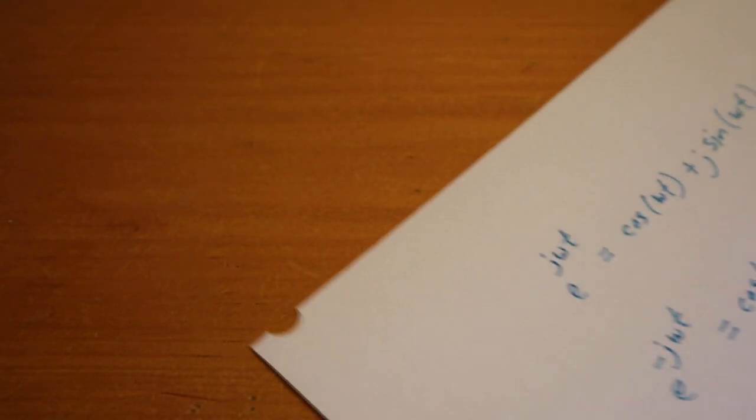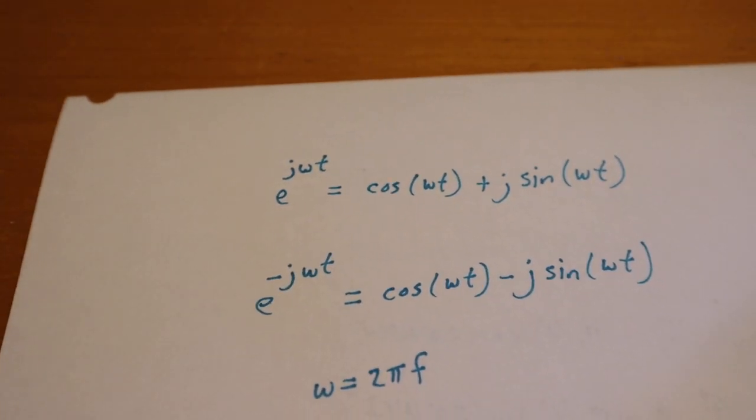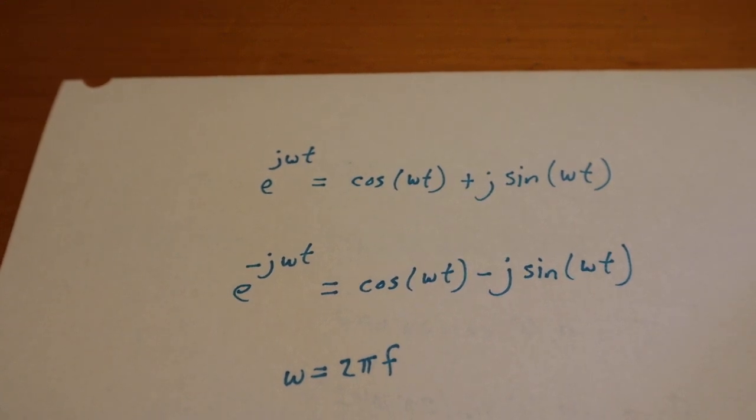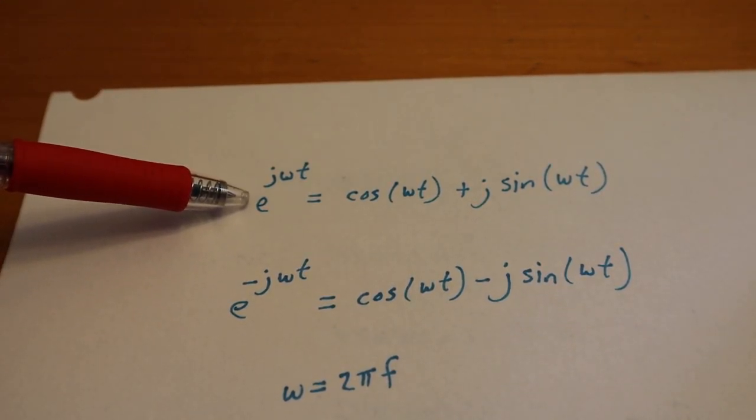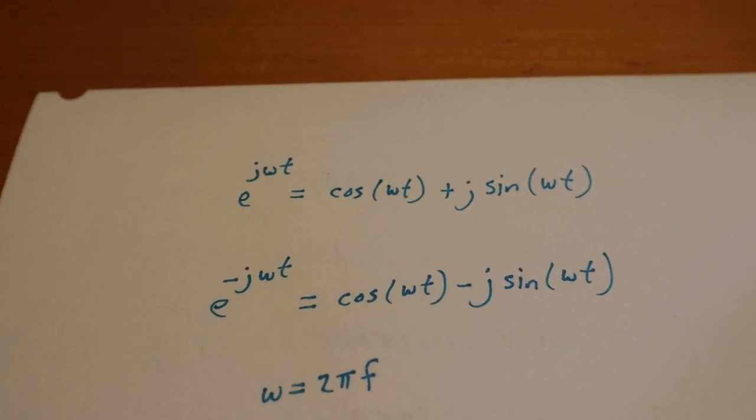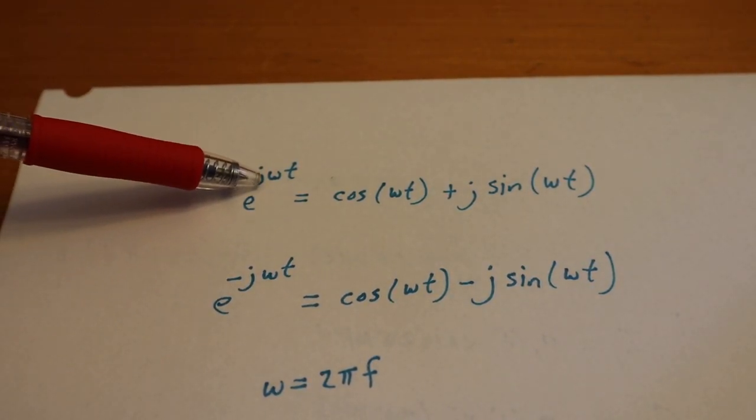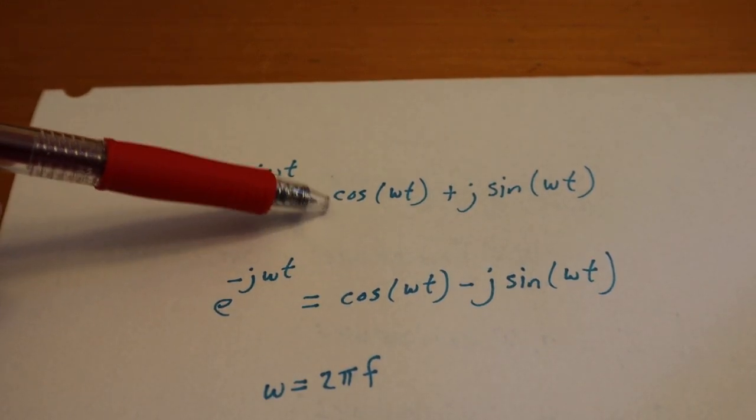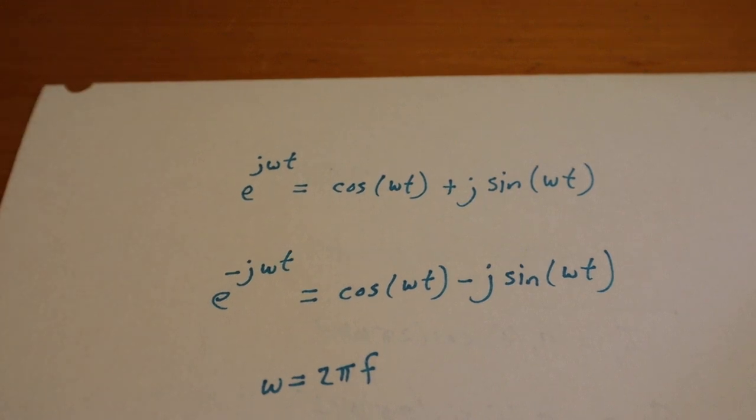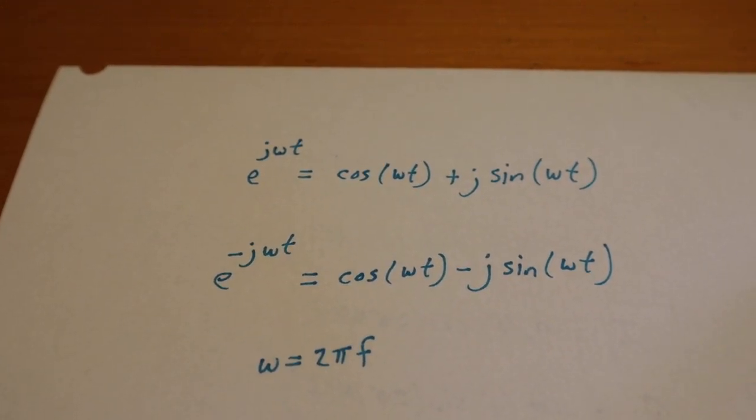Alright, clear as mud? Good. What's this e to the jωt this guy keeps talking about? Well, here it is, here's the definition. We could use good old Euler's to the rescue there. So this is e to the positive jωt is cosine ω plus j sine. Here's e to the negative jωt: cosine and a minus sign.